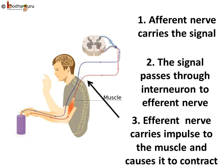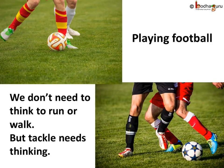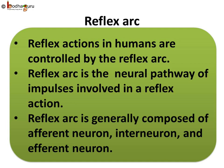So, we see reflexes do not require involvement of the brain. No thinking is involved, and it saves a lot of time. In real life, most of our actions are actually controlled by both voluntary and involuntary pathways. Like when you are playing football, you don't need to think how to run or walk, but you do some tackles which you do voluntarily. To sum up what we learnt today: reflex actions in humans are controlled by the reflex arc. The reflex arc is the neural pathway of impulses involved in a reflex action. There can be different types of reflex arcs, but it is generally composed of an afferent neuron, an interneuron, and an efferent neuron.